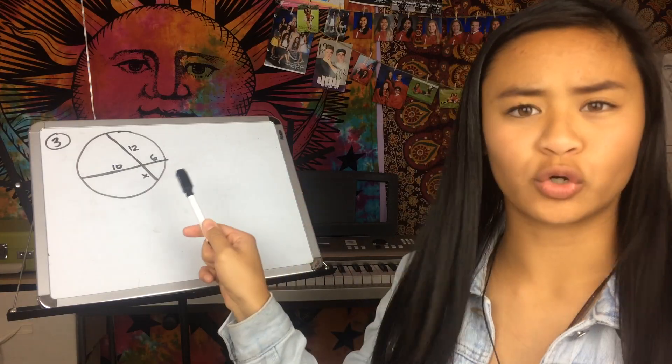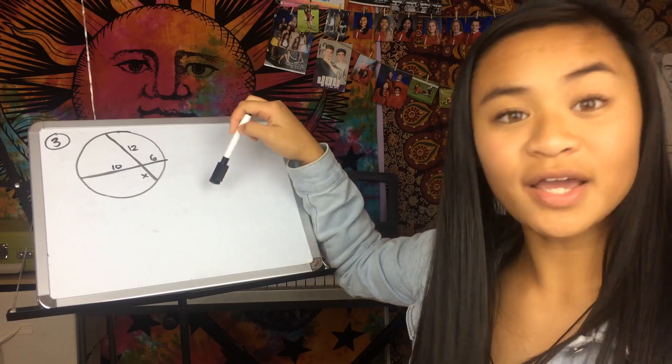Hi friends, it's Malaya! This is actually for a math assignment. I was contemplating whether or not to put this on public, but if you're watching this, lucky for you — you're in for a treat. I am teaching you math, but in a fun way. I made this entertaining for my math class. Let's get to it! Today I have a circle with two intersecting lines: 12 and x on one line, and 10 and 6 on the other.